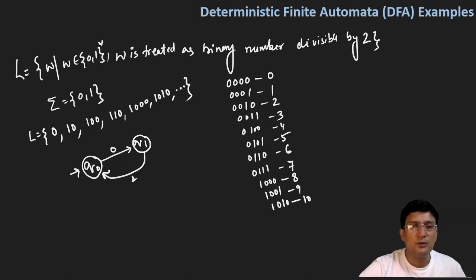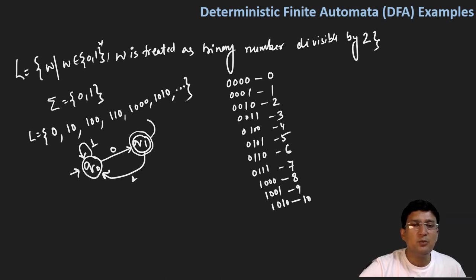So that is q0, and q1 here is the final state. We have a q0-to-q1 transition on input 1, and q0-to-q0 transition on input 0, and then the q1 state transitions.